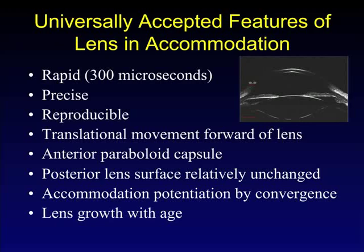What are the universally accepted features of the lens in accommodation? First, it's incredibly rapid, reproducible, and precise — roughly 300 microseconds to go from far to near or near to far. There is a translational movement forward of the lens. The anterior lens surface is paraboloid or catenary. The posterior lens surface is relatively unchanged in terms of its curvature. Accommodation can be potentiated by convergence — using two eyes together can improve accommodation, particularly when looking at something quite close — and this relates to the medial rectus muscle increasing pressure on the vitreous. It's also universally accepted that the lens grows with age, as laying down more fibers makes it bigger and structurally more rigid.